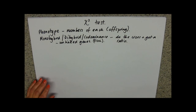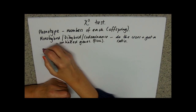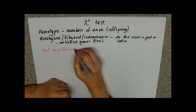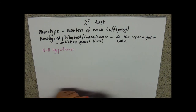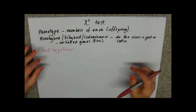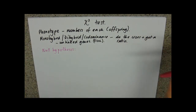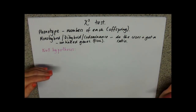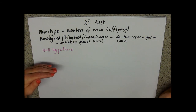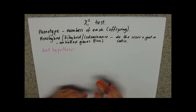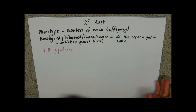Null in Latin means 'nothing,' so the null hypothesis is the hypothesis you are testing in chi-squared. If your null hypothesis is accepted, you're saying you were right about your model of inheritance — for dihybrid, that the genes are on different chromosomes. If you reject the null hypothesis, you're saying something else is going on — the genes might be linked, or one gene is affecting another.